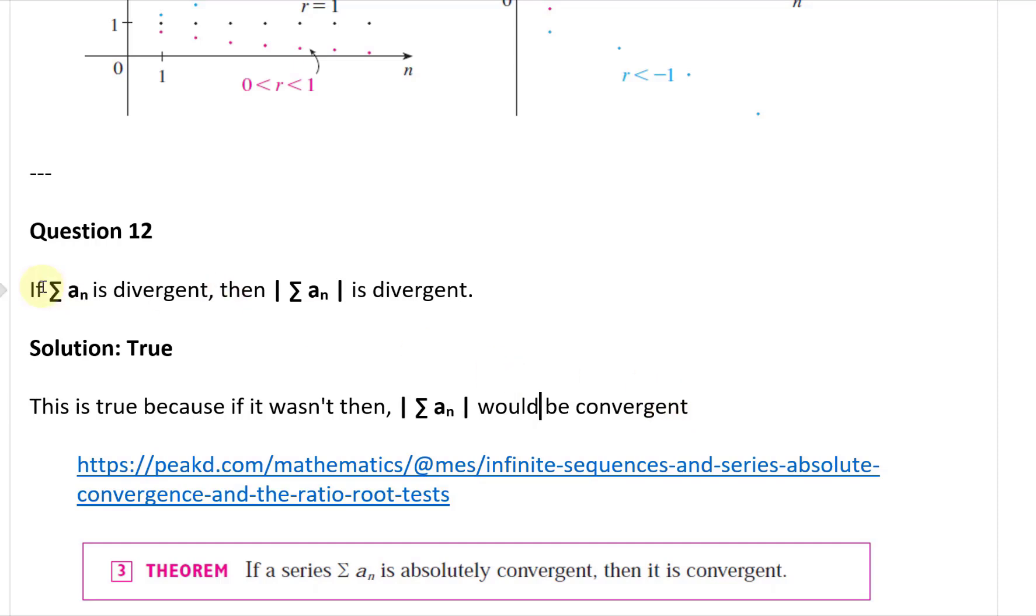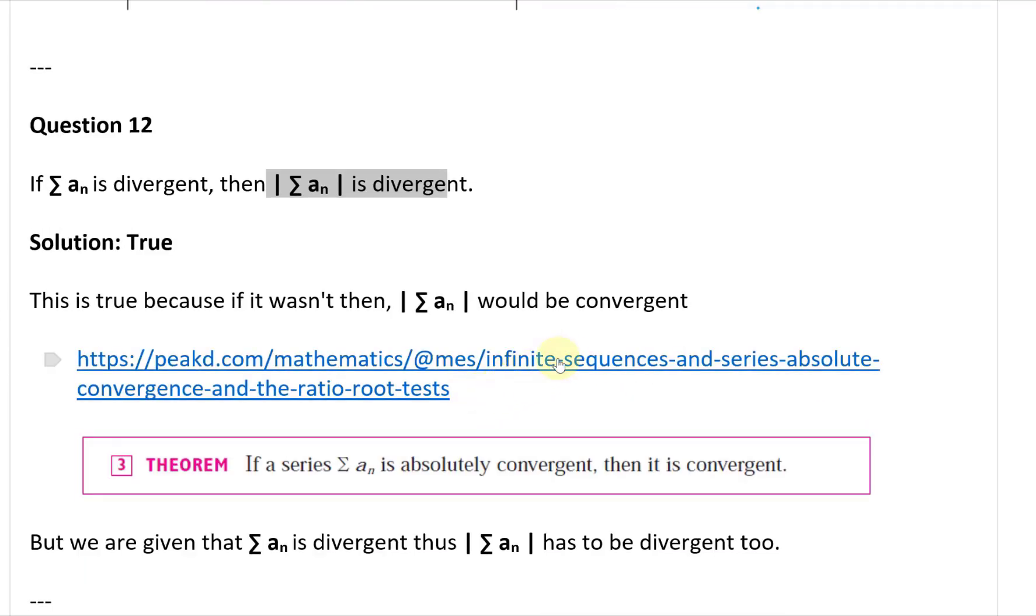So notice here, if this series is divergent, so let's say if this was true, if this was divergent, then over here this would be convergent if it wasn't true. So for example, but then this is absolutely convergent, and then this would make this convergent, so it wouldn't make any sense. So this is true because if it wasn't, then absolute value of aₙ would be convergent, or I'll just say it would be absolutely convergent.